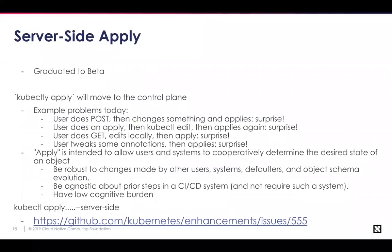Server-side apply is graduating to beta. Everybody knows kubectl apply is a core part of the Kubernetes config workflow, but it can be buggy and hard to fix. There can be conflicts if a user performs a post operation that changes during the applying phase. This functionality will be moved to the control plane. Apply is invoked by sending a certain content type with the verb patch. Also, the self-link field is being deprecated and removed — there's been no compelling use of self-link for a while. When modifying or reading an object from the API server, self-link was set to the URL used to perform that operation. Following the Kubernetes deprecation process, this field will be deprecated in one year.